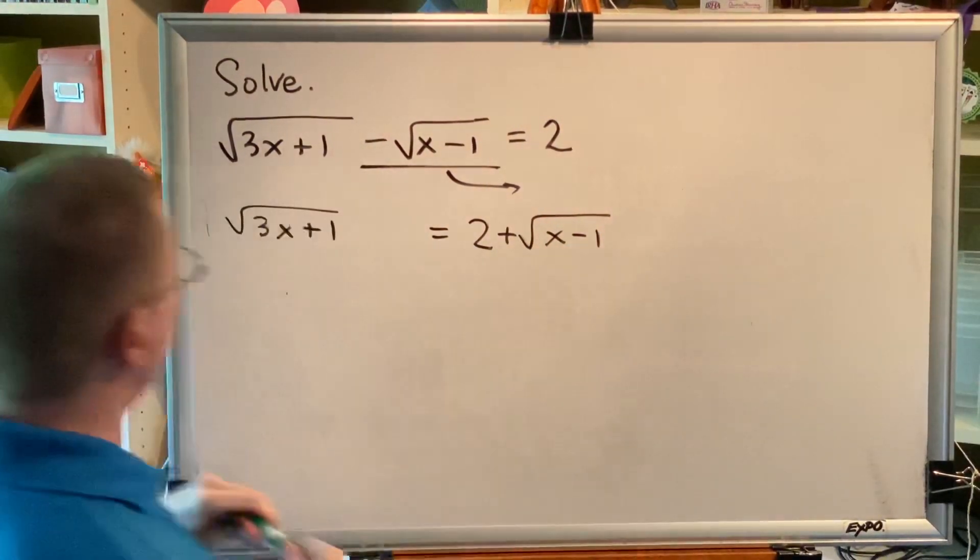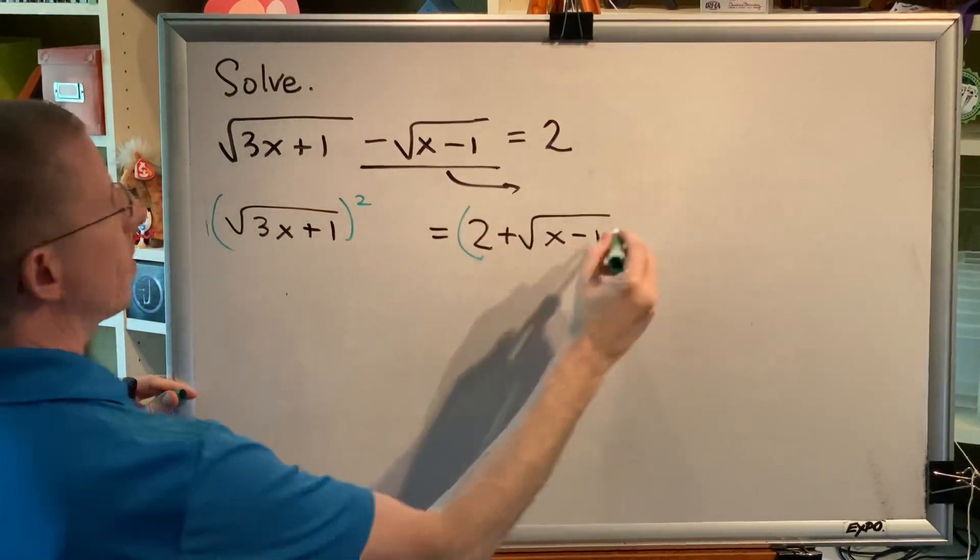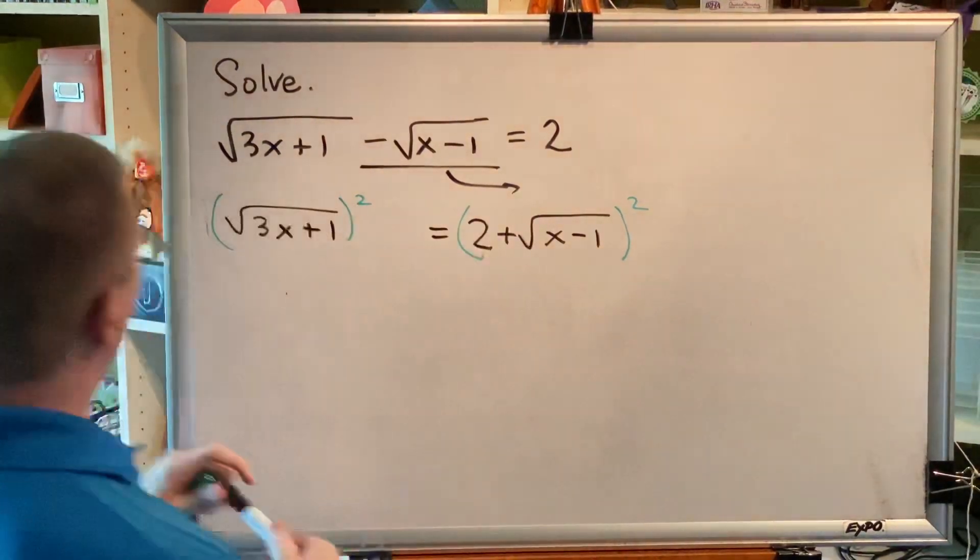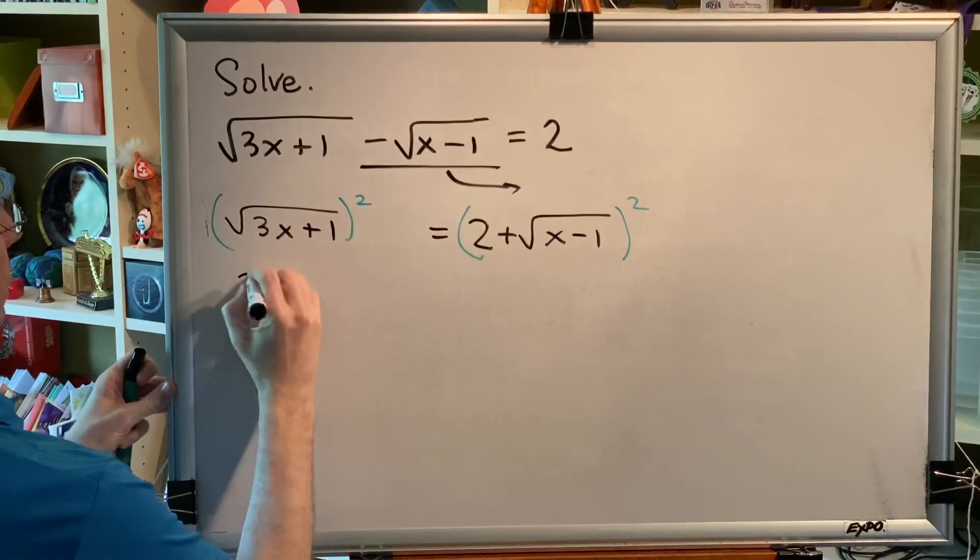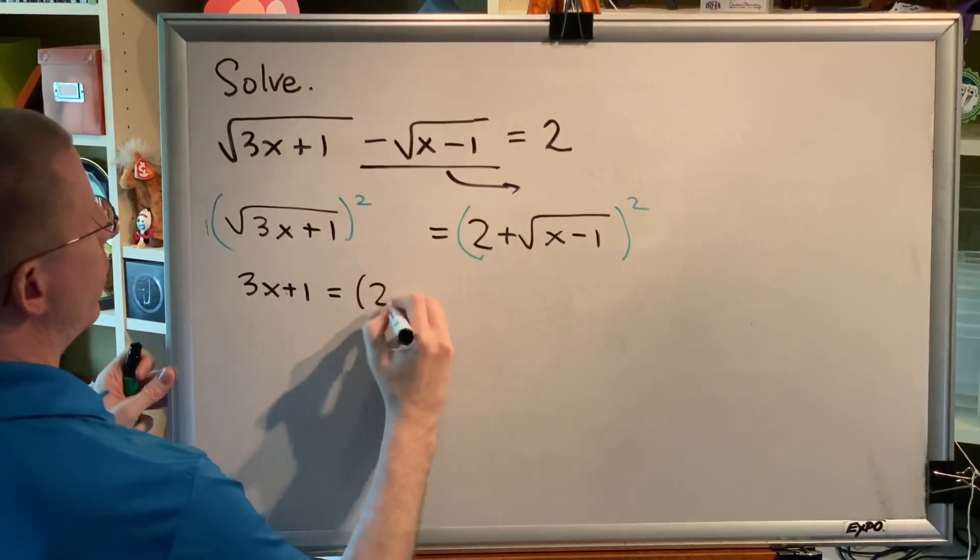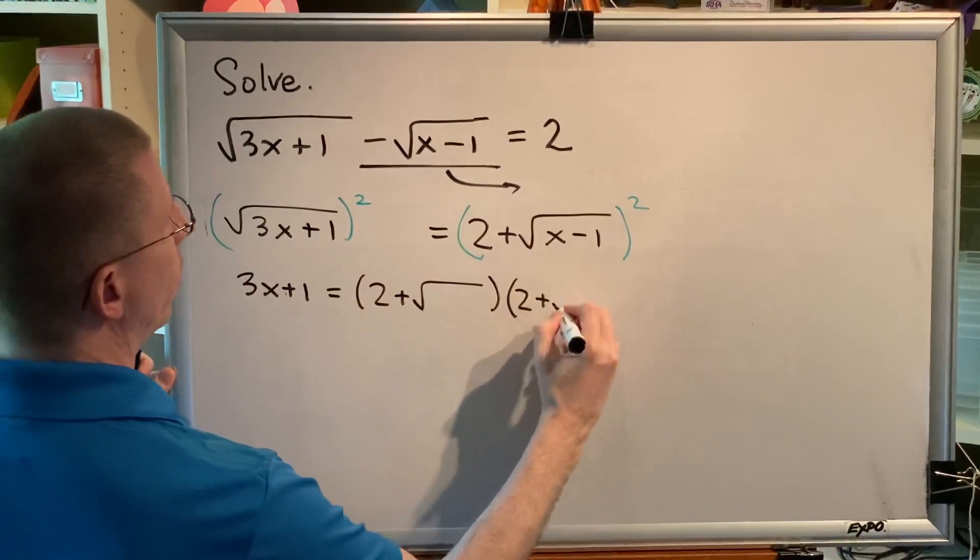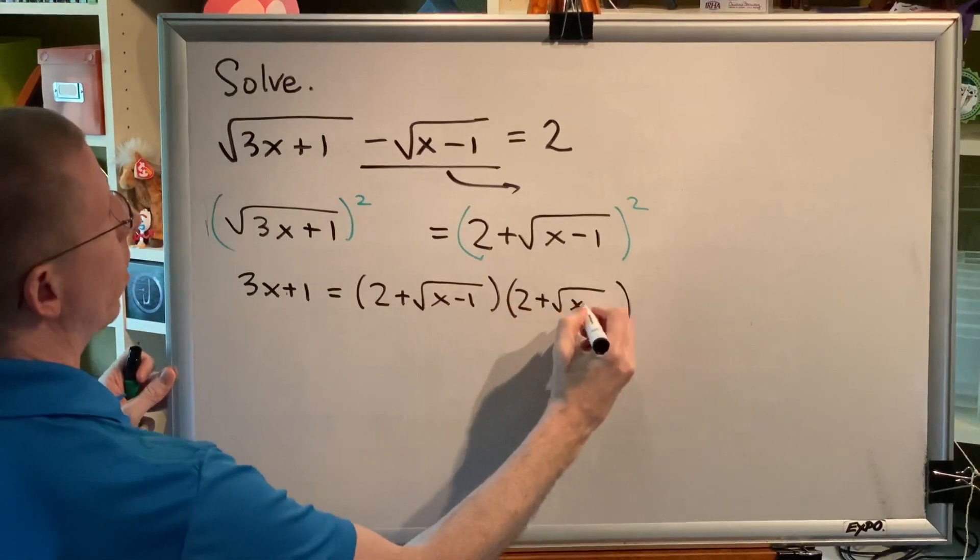Since this radical is isolated and has an index of 2, I raise the entire right side and the entire left side to the second power. On the left side, the 2, the square, and the square root cancel, leaving me 3x plus 1. On the right side, I have to use FOIL. I have 2 plus radical times another 2 plus radical. Both of those radicals contain an x minus 1 beneath.